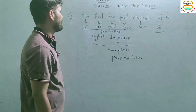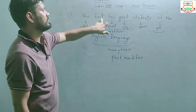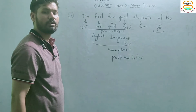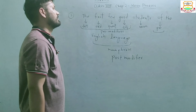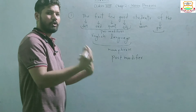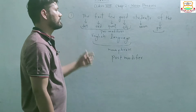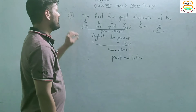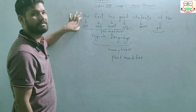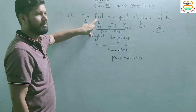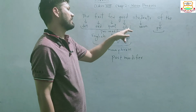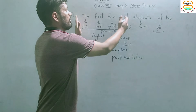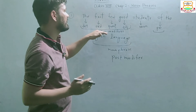For example, in the sentence 'the first few good students of the English language', there is an order being followed. The determiner 'the' is placed first, then the ordinal 'first', then the quantifier 'few', then the adjective 'good'. All of these — 'the first few good' — as a whole are known as pre-modifiers.